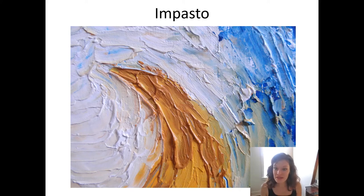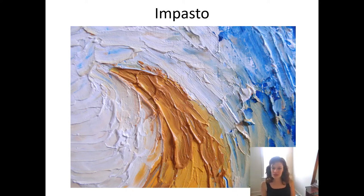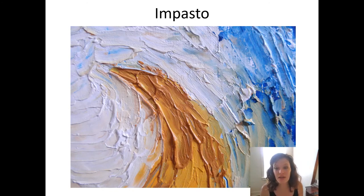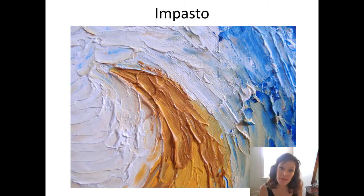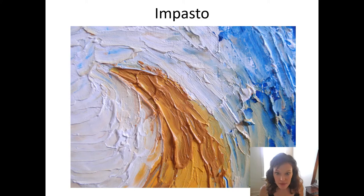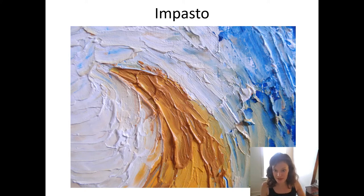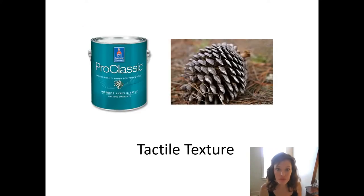Today we're going to be talking about impasto paint, and I'll also be doing a demonstration on how to paint in different impasto techniques with the brush, the palette knife, etc. at the end of this lecture — all on the same video. Impasto literally means dough, and it refers to paint that is applied very thickly so that it has a texture that produces highlights and shadows. It's very three-dimensional, not flat like other alla prima painting.